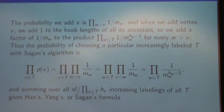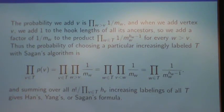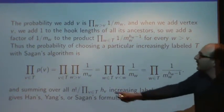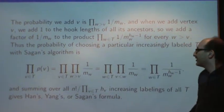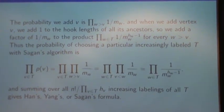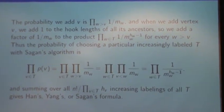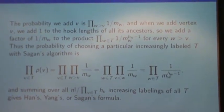Now, sum that over all the n factorial over the product of the hook lengths, increasing labelings of all the trees, and that proves Han's formula, or Yang's formula, or Sagan's formula, all of which have essentially the same form.